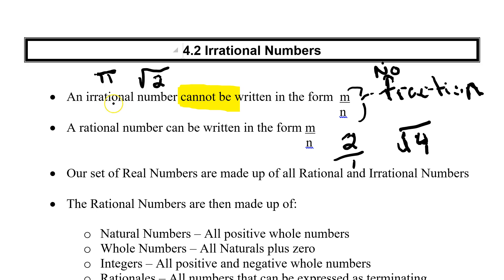So our irrational numbers, there's not really much we can do with them. But we want to look at our rational numbers a little bit closer. And our rational numbers make up what we call our set of real numbers. These are the rationals and the irrationals.